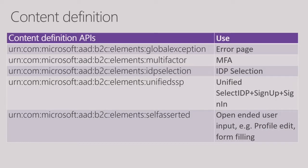Content definitions are our best friend for modifying the UX. In the policy, content definitions are in the building blocks section and are referenced in either a user journey step or in a technical profile. Every time it is referenced, the reference is specific to a content definition for that particular page that needs to show UI. For example, there is one control in IEF that shows identity providers on a screen — we call it the IDP selection page — and its content definition is different from the content definition for a self-asserted provider page.